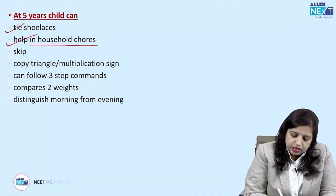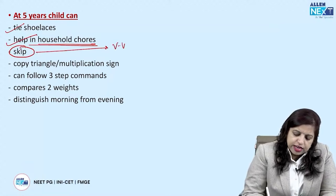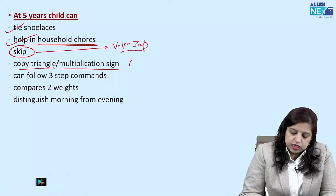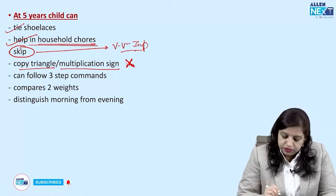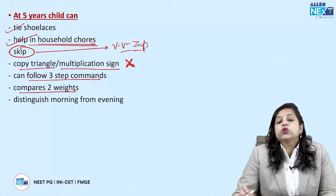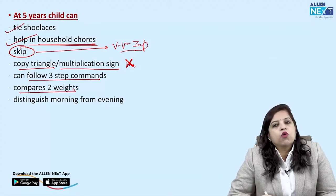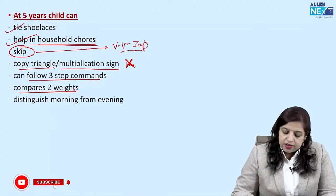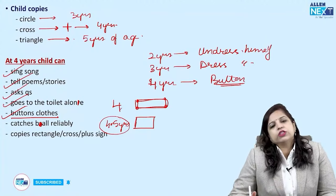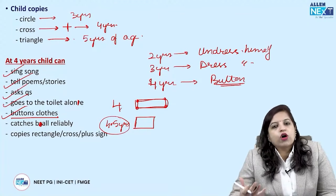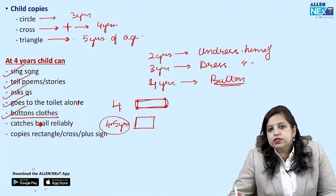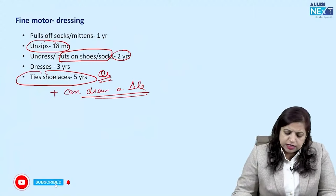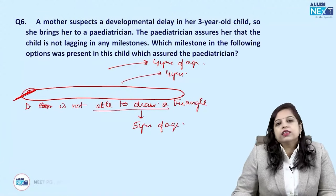At five years, the child can tie shoelaces, help in household tasks, skip, copy a triangle or a multiplication sign, follow three-step commands, compare two weights, and distinguish between morning and evening. Three, four, and five years are a hotbed for exam questions, so be well aware of what the child can do at each of these ages.